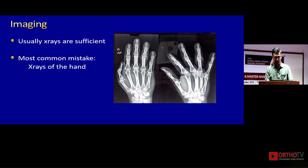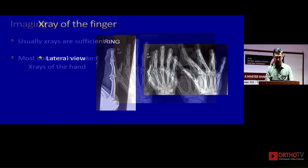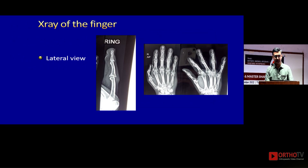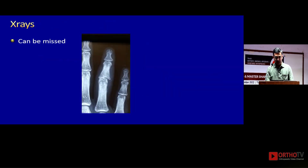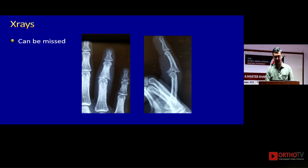Most of the time x-rays are sufficient; I've rarely taken a CT or MRI for the proximal interphalangeal joint. The commonest mistake is taking x-rays of the hand. You can see an injury to the ring finger that looks almost normal and could be treated with buddy taping or splinting, but if you take a lateral x-ray of the finger you can see a significant subluxation and a really large volar fragment that was missed and has healed in that position.